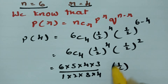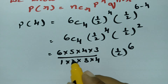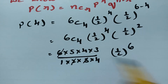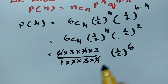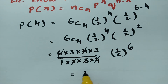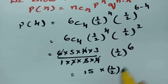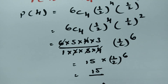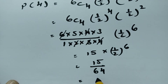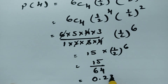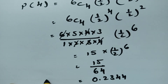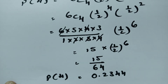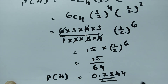This gives (1/2)^6. After cancellation — 2×3 = 6 and 4 cancels — we get 15 × (1/2)^6, which is 15/64. Therefore, the probability of getting 4 heads when a fair coin is tossed 6 times is 0.2344.